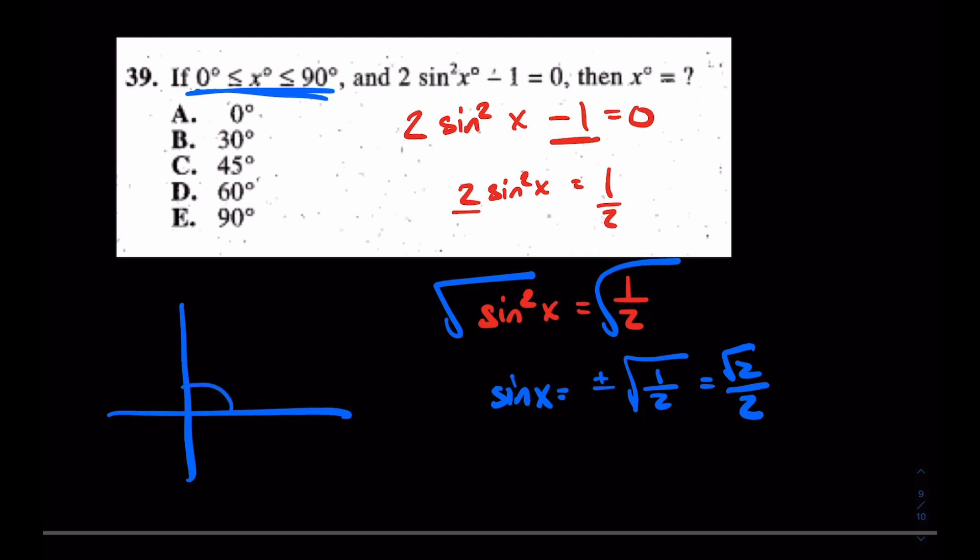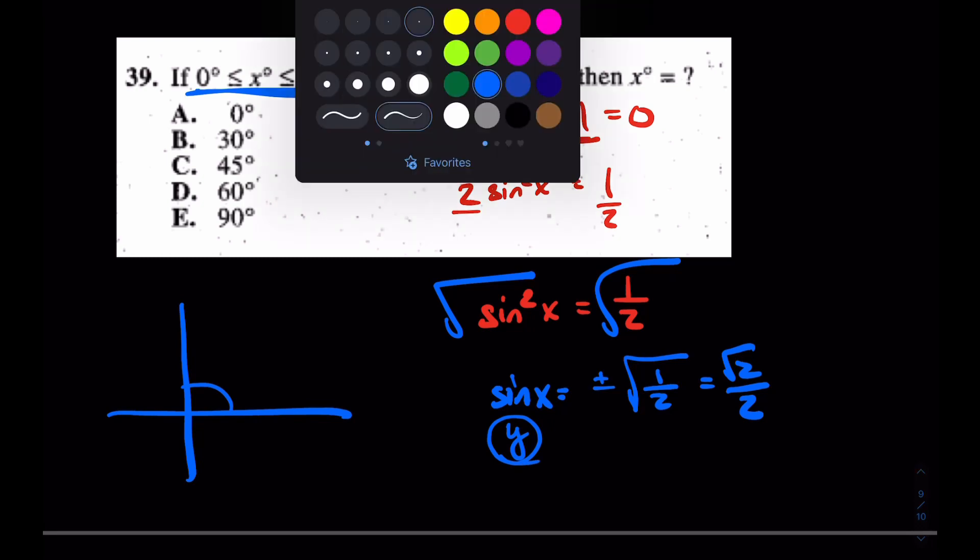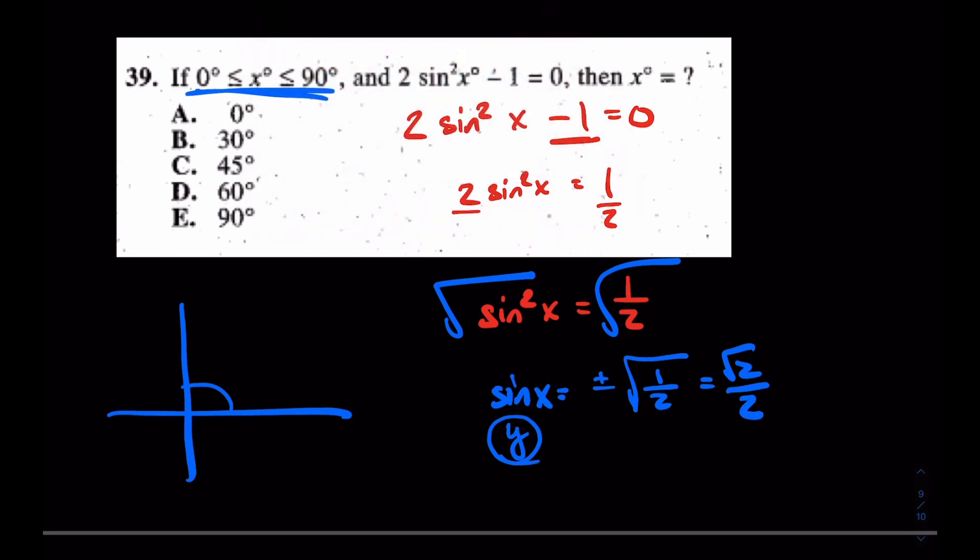Now, my question, keep in mind, we're on the interval of 0 to 90. So 0 to 90, where does this exist? Where is the y coordinate? Remember, on the unit circle, sine is the y coordinate. Where does this exist? Where does √2/2 exist? Well, it's right here. It's at π/4, better known as 45 degrees. The answer was C.